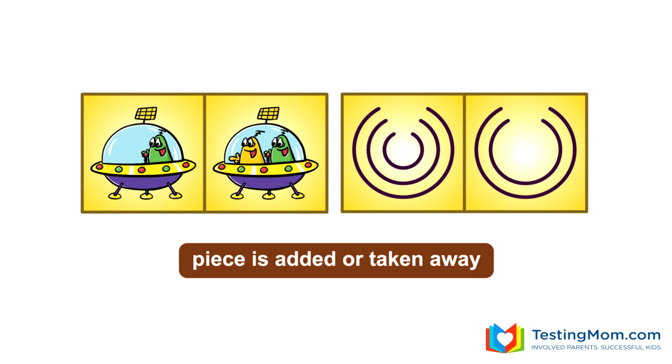The next rule is to add or take away a piece. On the left side, you can see that a character in the spaceship is added. On the right side, the piece in the center is taken away.